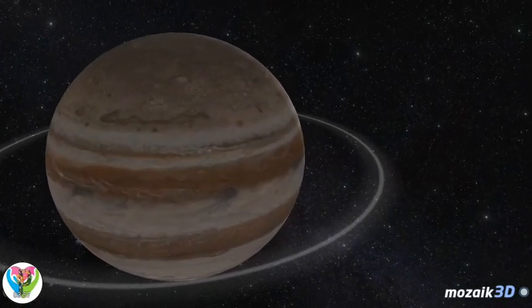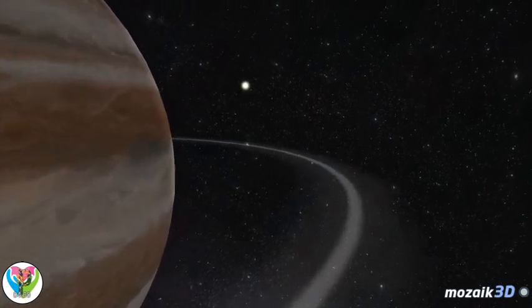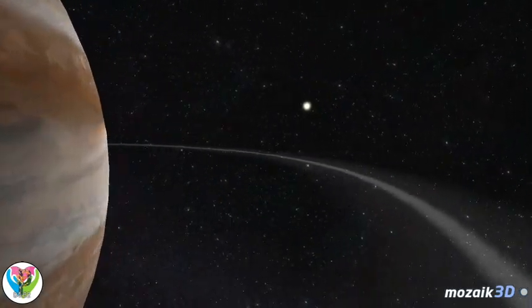Jupiter has a ring system made up of dark dust particles, which is less than 30 kilometers in thickness.